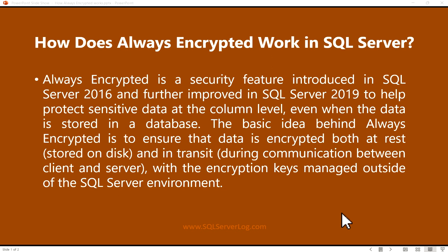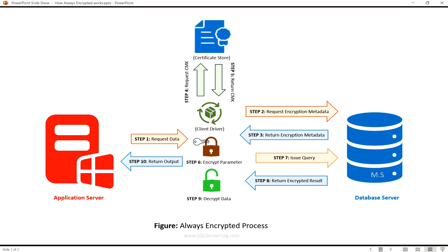This figure explains the Always Encrypted process step by step. In step one, the application issues a query and establishes a connection to the database server, specifying that the connection should utilize Always Encrypted. Once the connection is established, the application can then execute the query in the standard fashion.